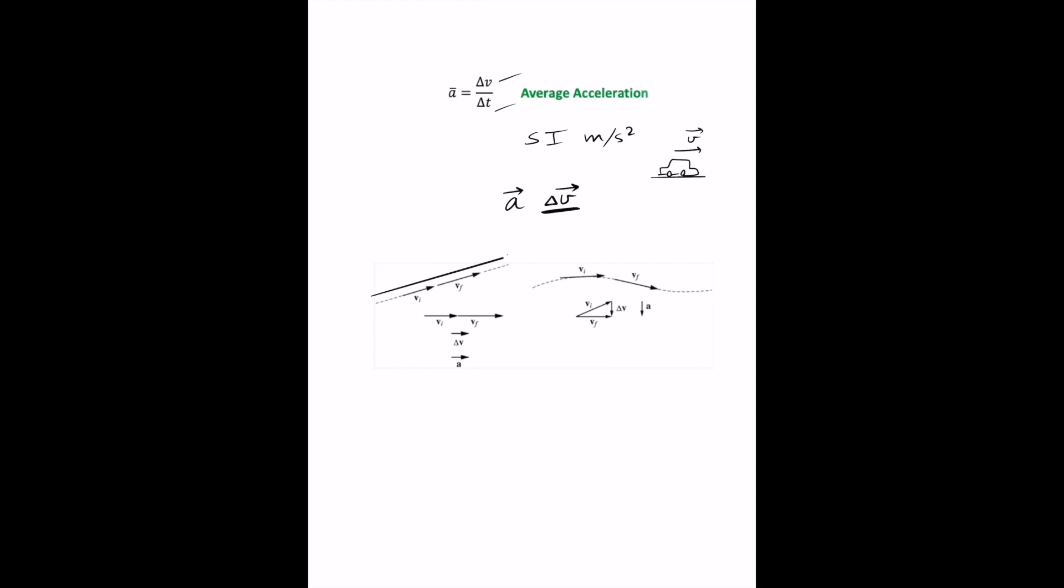For an object moving in a straight line like this car, then the acceleration is parallel to v if v is increasing and anti-parallel if v is decreasing, because as you can see, a is in the same direction as delta v.